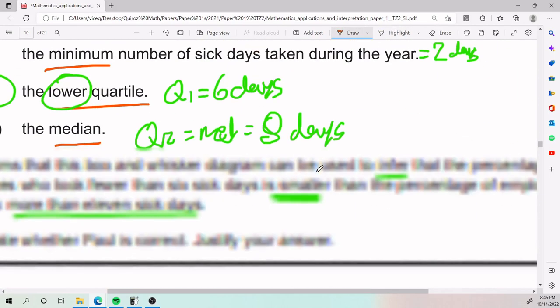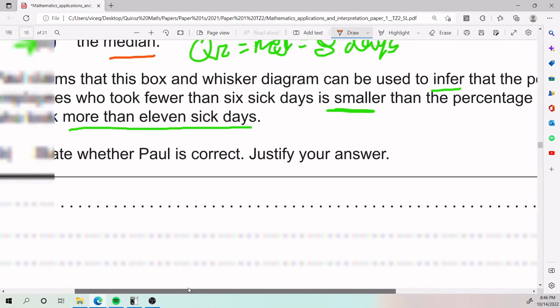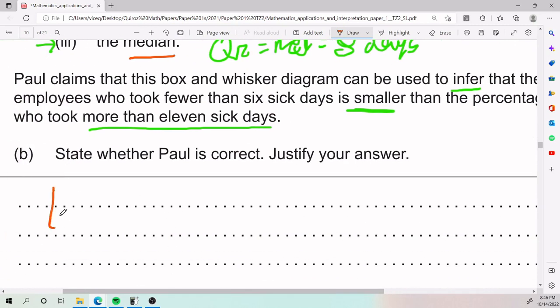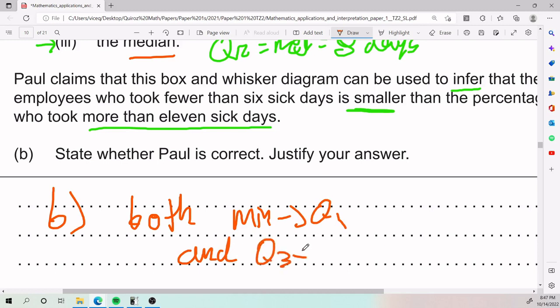One thing is spread, another thing is amount. The amount is the same because they are both 25%. Aha, interesting. And so we would say that, hey Paulie, sorry homie, but you're kind of wrong. You are wrong because both min to Q1 and Q3 to max are 25%.